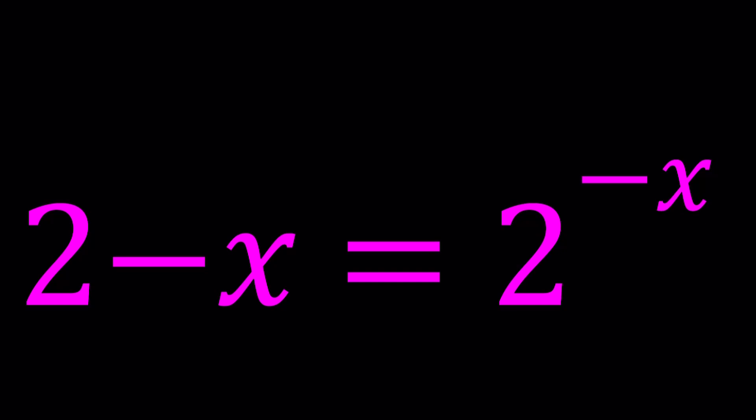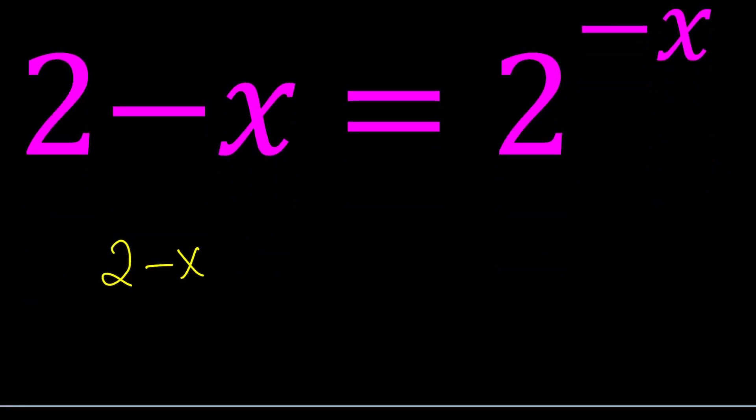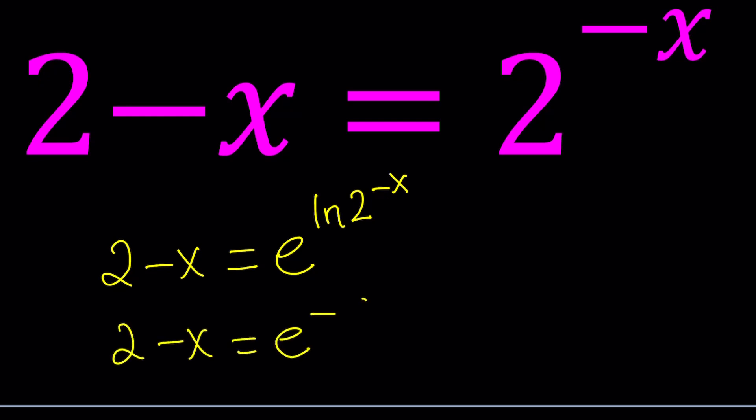So let's go ahead and start by writing the right-hand side as a power of e. I'm going to go ahead and write this as 2 minus x equals e to the power ln 2 to the power negative x, which is the same thing as 2 to the power negative x, but I do want an e on the right-hand side. So that's my first step. Next step is I'm going to bring the negative x to the front, so it's going to be 2 minus x equals e to the power negative x ln 2.